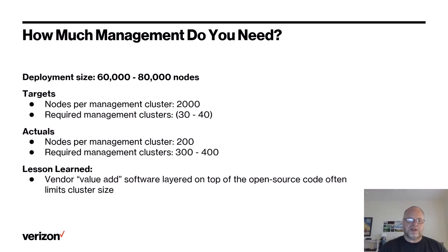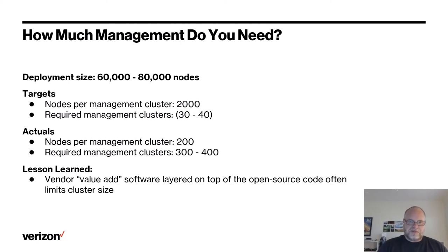When VRAN is fully built out, we'll have a fleet of up to 80,000 servers. Our expectation was that we could support 2,000 nodes per management cluster, resulting in 30 to 40 management clusters. The reality is we're only able to get 200 to 250 nodes per cluster, meaning we'll need 300 to 400 management clusters. The issue wasn't the open source platform itself — the limiting factor was a vendor-added analytics platform on top of the open source system that was significantly slowing down the deployment process. Removing that add-on has significantly improved the deployment process.